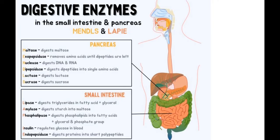Our body can produce up to 40 different enzymes, but interestingly, that is not enough. If we consume additional enzymes with food — for example, papaya contains the enzyme papain — this helps to digest food. Eating papaya salad is therefore useful and helps digestion.